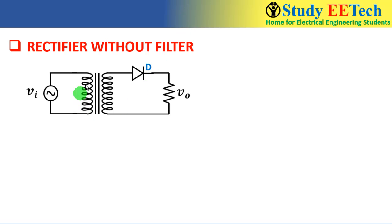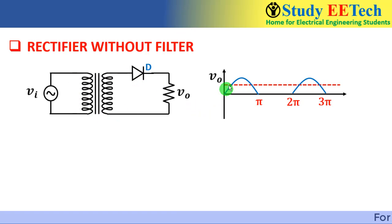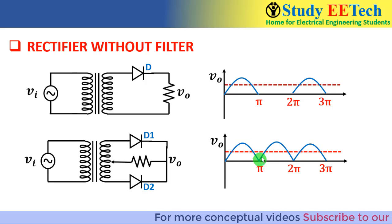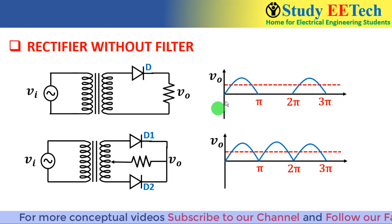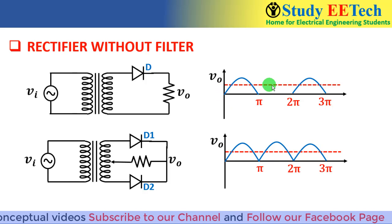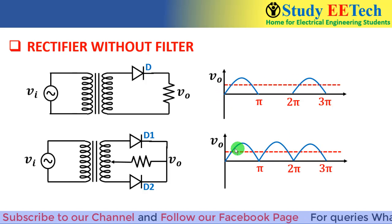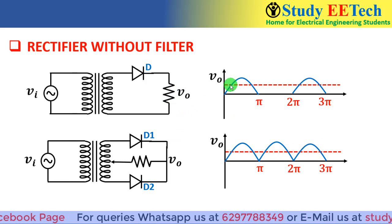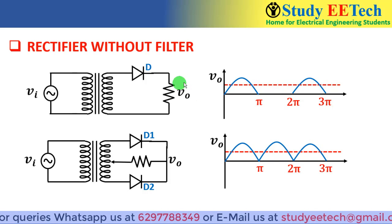We know this is a half wave rectifier circuit — a single diode is used — and the output voltage waveform is like this; in the negative half cycle we do not get any output. In the full wave rectifier, the output voltage appears in the negative half cycle as well. But our desirable output voltage is the dotted red line — the DC — and the rectifier is not capable of providing that type of DC.